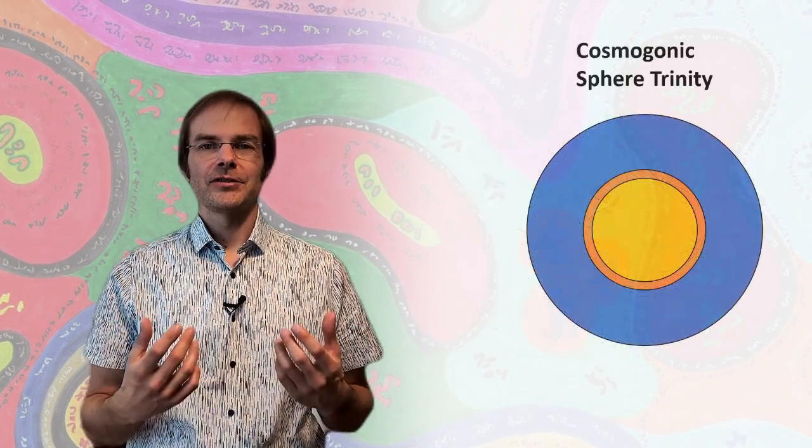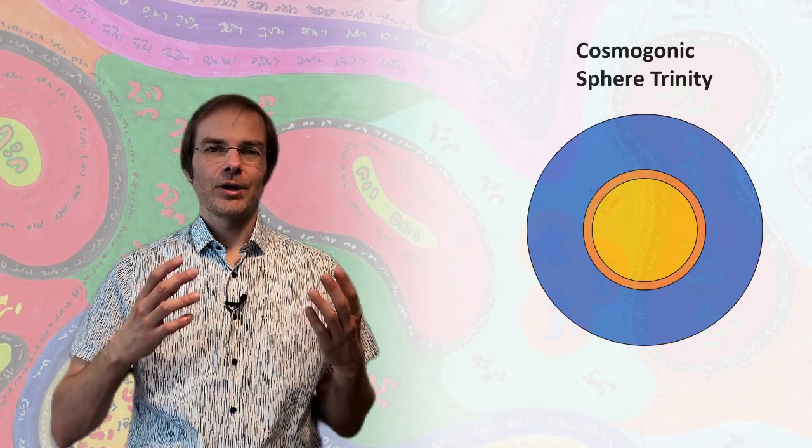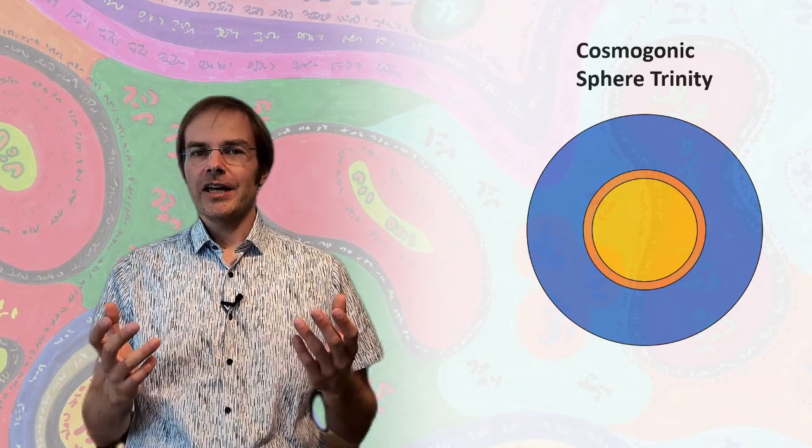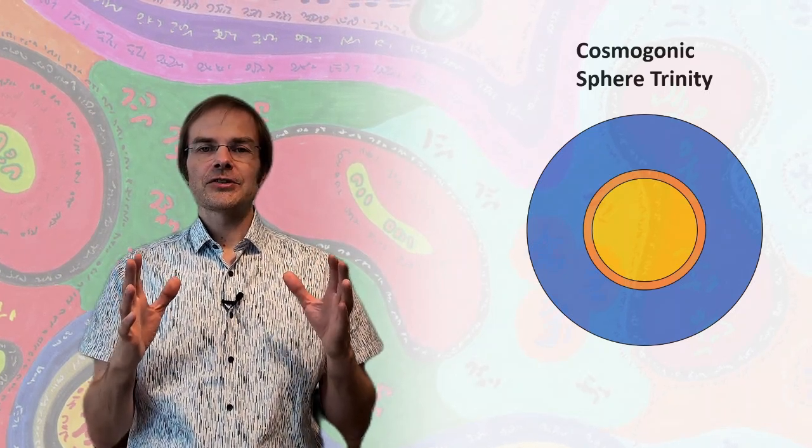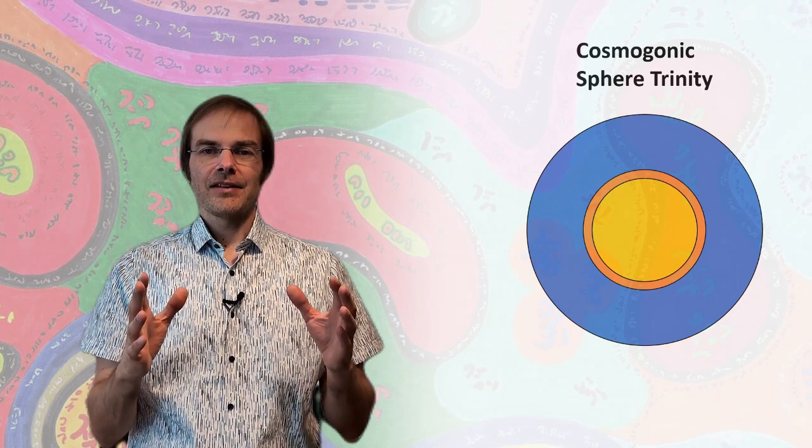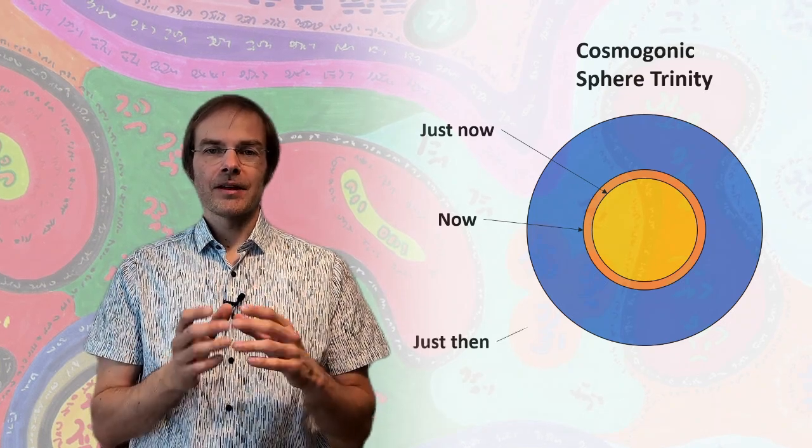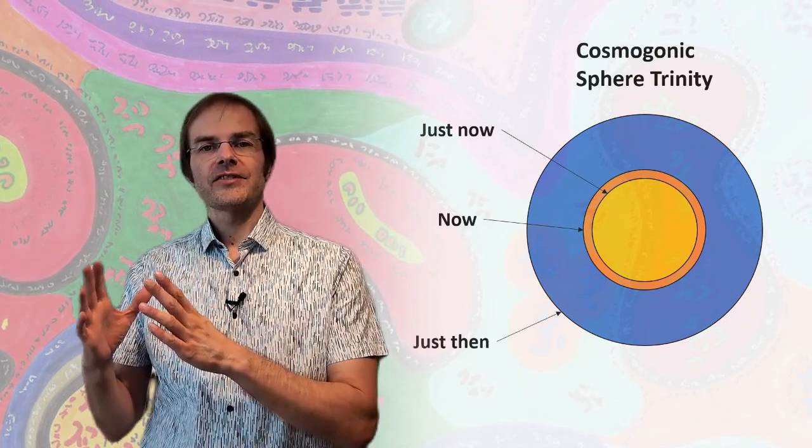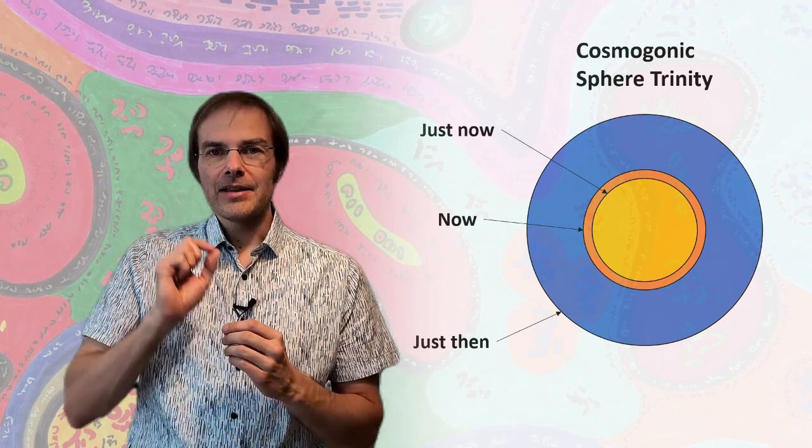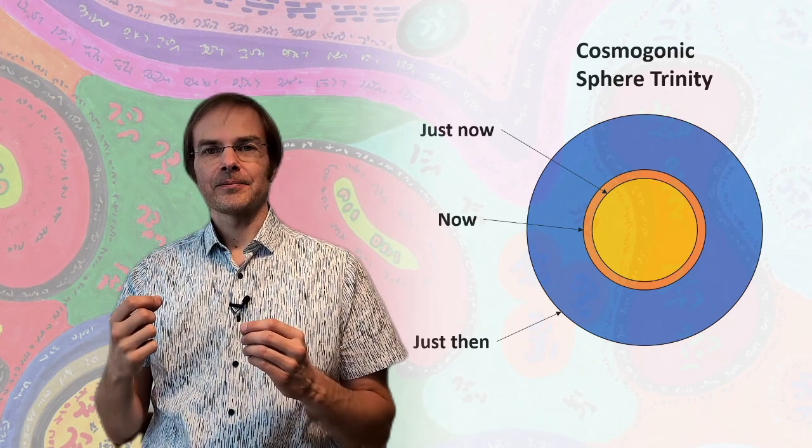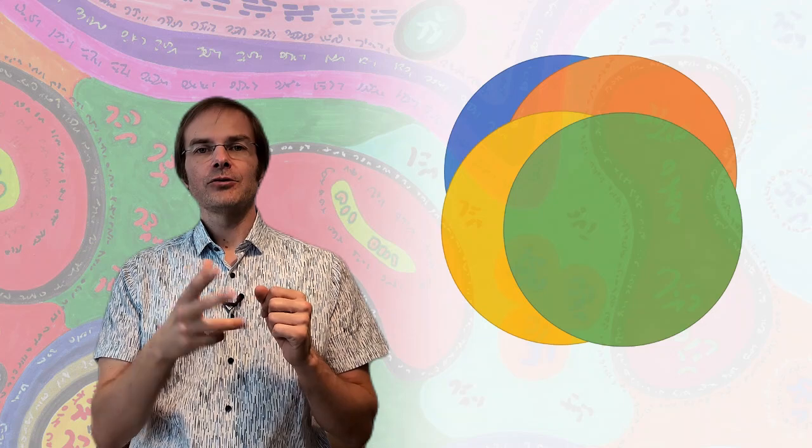Together with his colleague, Walter Dröscher, Heim went to interpret what this means, this sphere trinity. And they found that you could say they represent the first moment of existence. And the three spheres represent present, past and future. So the now, the just now and the just then. And when the first moment arises, or rather when the first moment passed, these spheres split from three into four, forming the next moment, and so on, and so on.